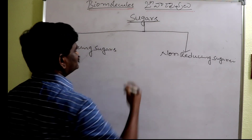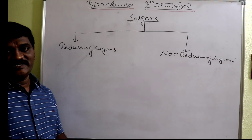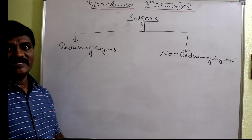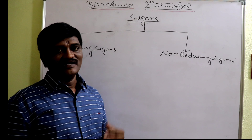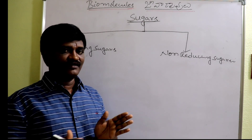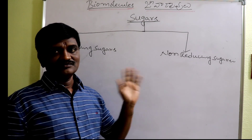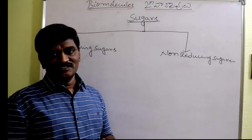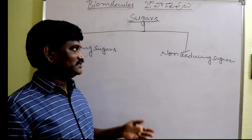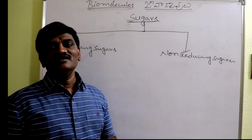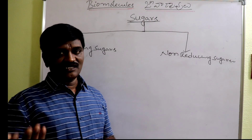What are sugars? Carbohydrates which are sweet in taste, crystalline, and soluble in water are called sugars. On the other hand, non-sugars are carbohydrates which are tasteless, amorphous, and insoluble in water.